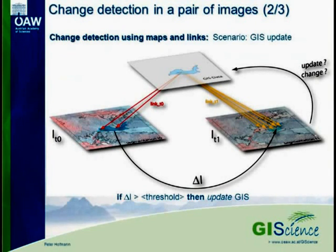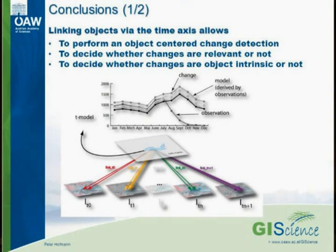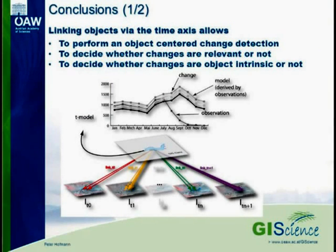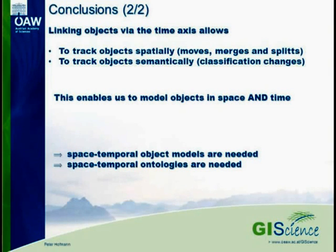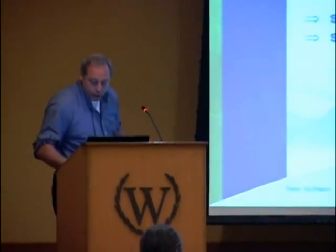What does change detection and map updating actually mean? What is typical for a lake, especially in high mountainous areas — does it behave like this or not? What we actually need are some models about the objects — space-temporal models. This would be the typical behavior of this lake, and at a certain position there would be an event — for instance the lake shrinking extremely, meaning something has happened. By linking objects with the time axis, you can detect these events. This requires the creation of space-temporal rule sets, models across space and time, and maybe also space-temporal ontologies — like what is typical for a horse and its movement.